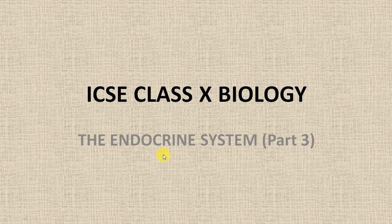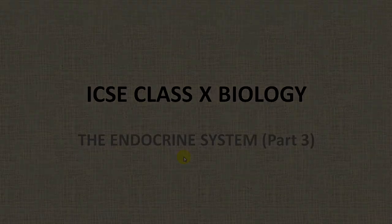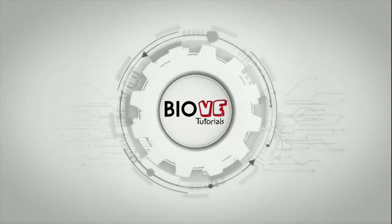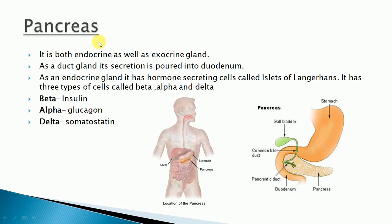Today we are going to continue the endocrine system chapter of ICSE class 10 biology. This is part 3 of this chapter. In the previous part we studied about the endocrine glands, specifically the adrenal gland. In this part we will study about another endocrine gland present in our body, that is the pancreas.